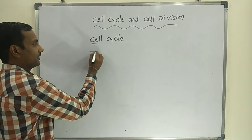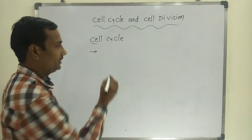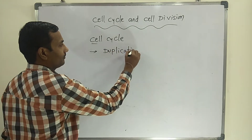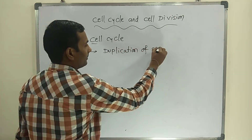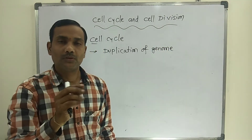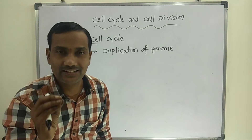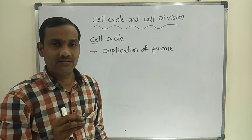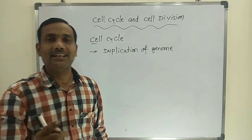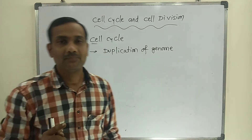The first event is duplication of the genome. The genome is the total complete genetic material of the cell. The total duplication of the genome is the major important event that occurs during cell division.